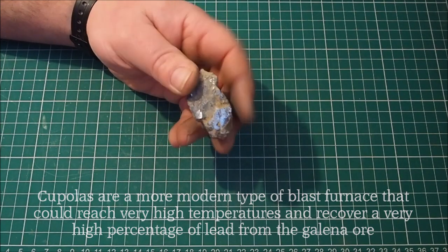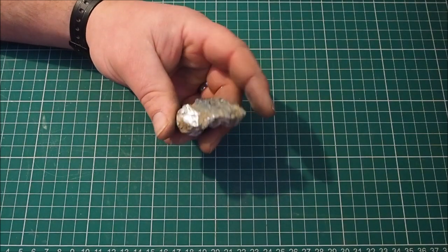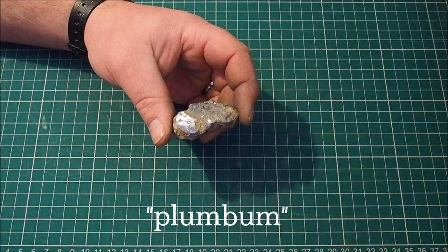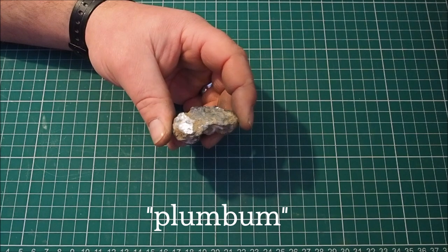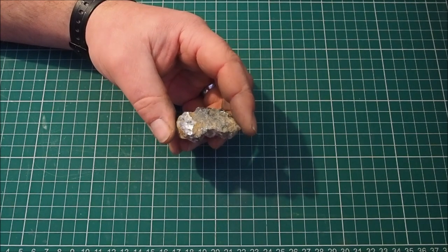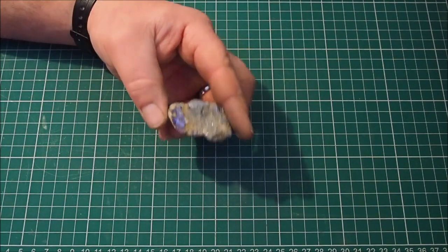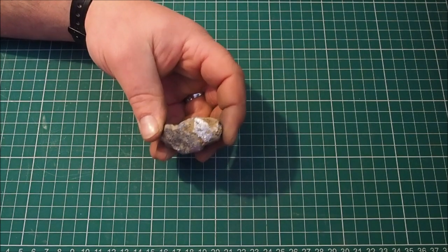So Galena gets its name from the Roman word plumbum, which is the Latin word for lead. The word plumbing and the use of the PB chemical symbol comes from this word. It's probably something you remember from GCSE chemistry.